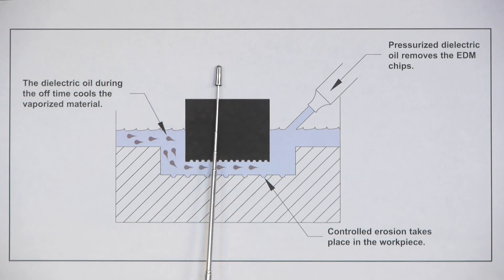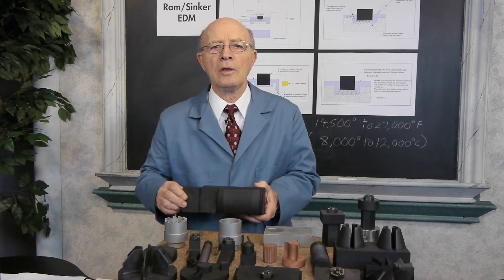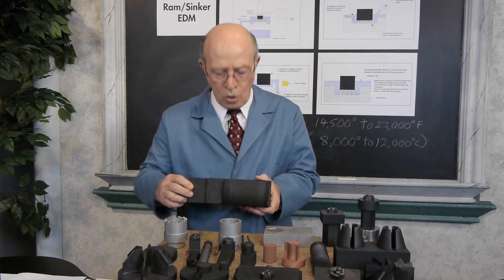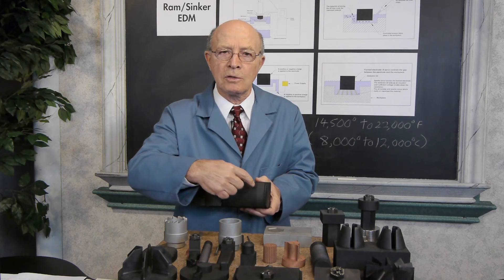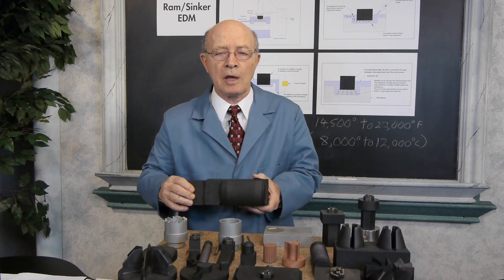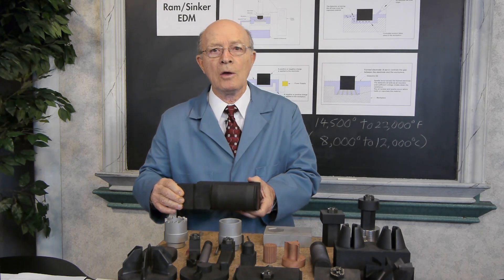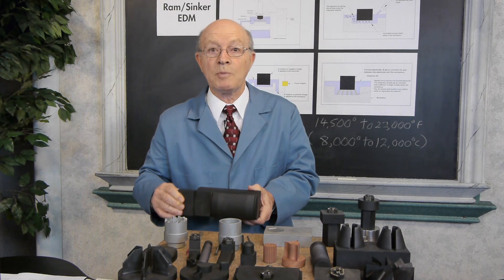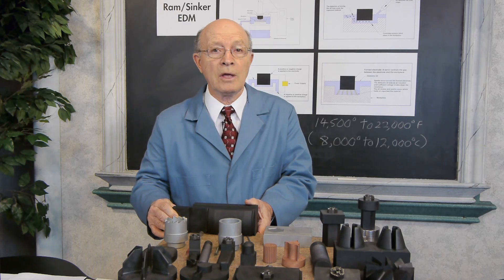The electrode moving up and down, this pecking of the electrode creates a pumping action. In the old EDM machines, they used to put holes into the electrodes on angles to assist in flushing. But the new machines now with their pecking abilities, we find that we don't need many holes. But still, a hole in the electrode does help.